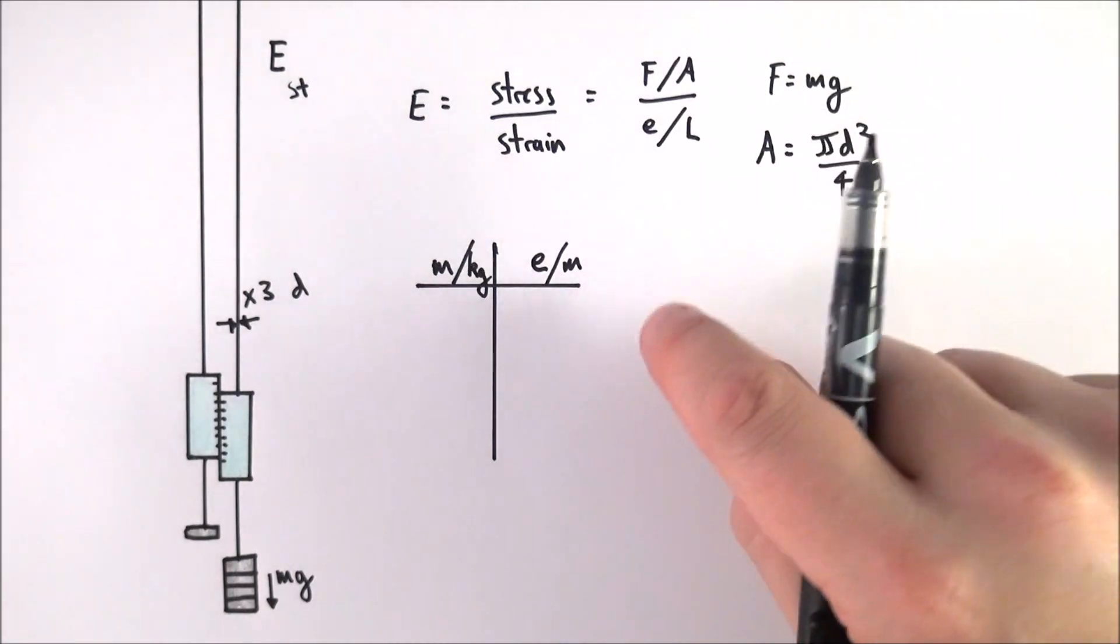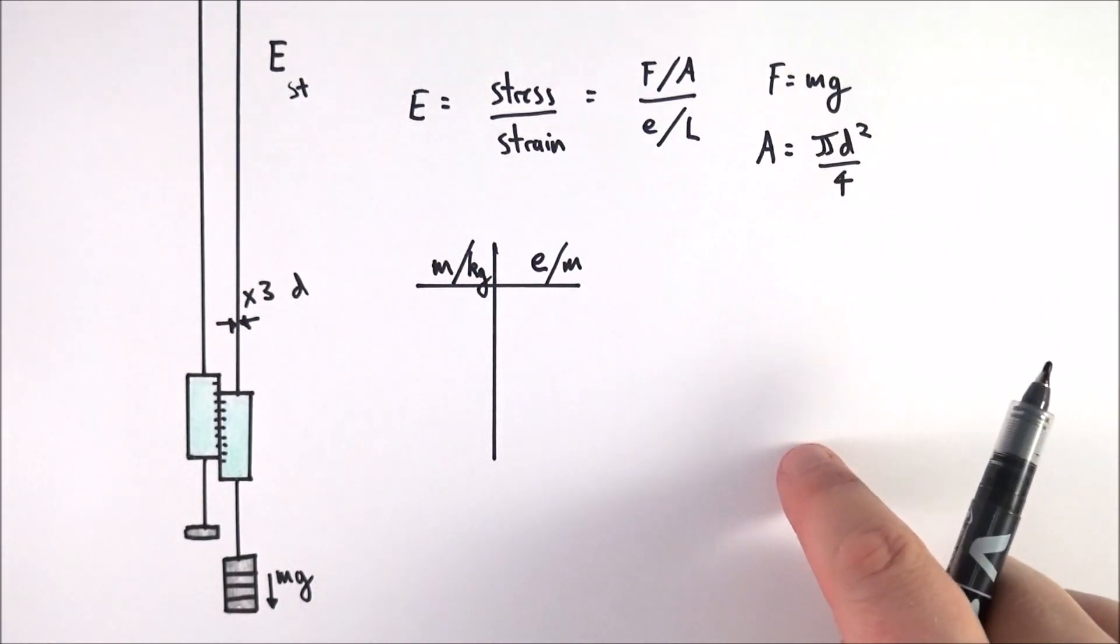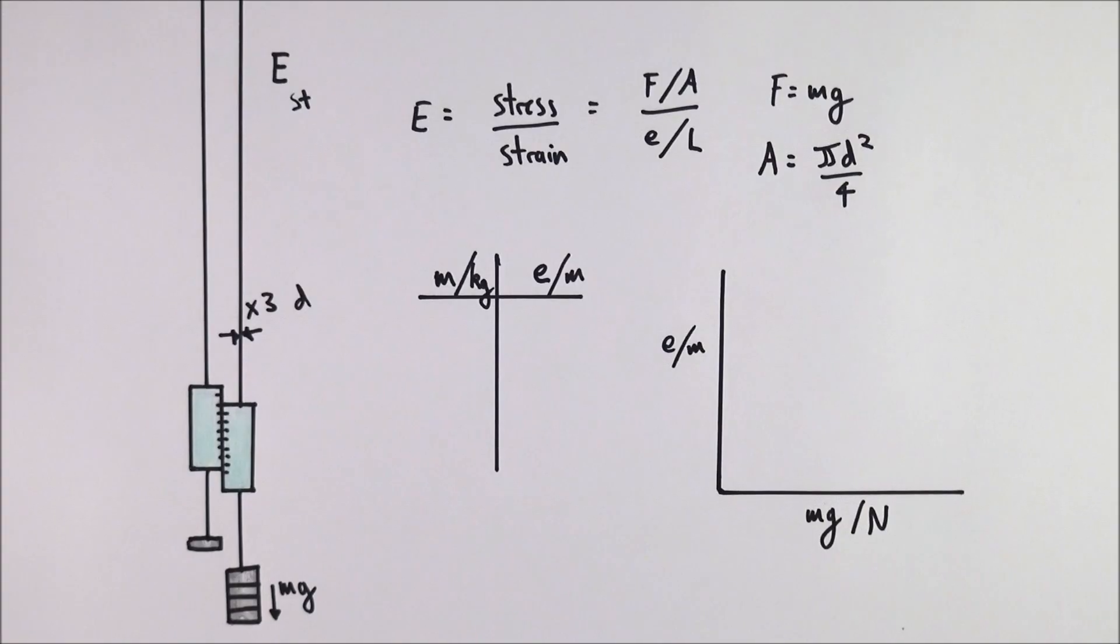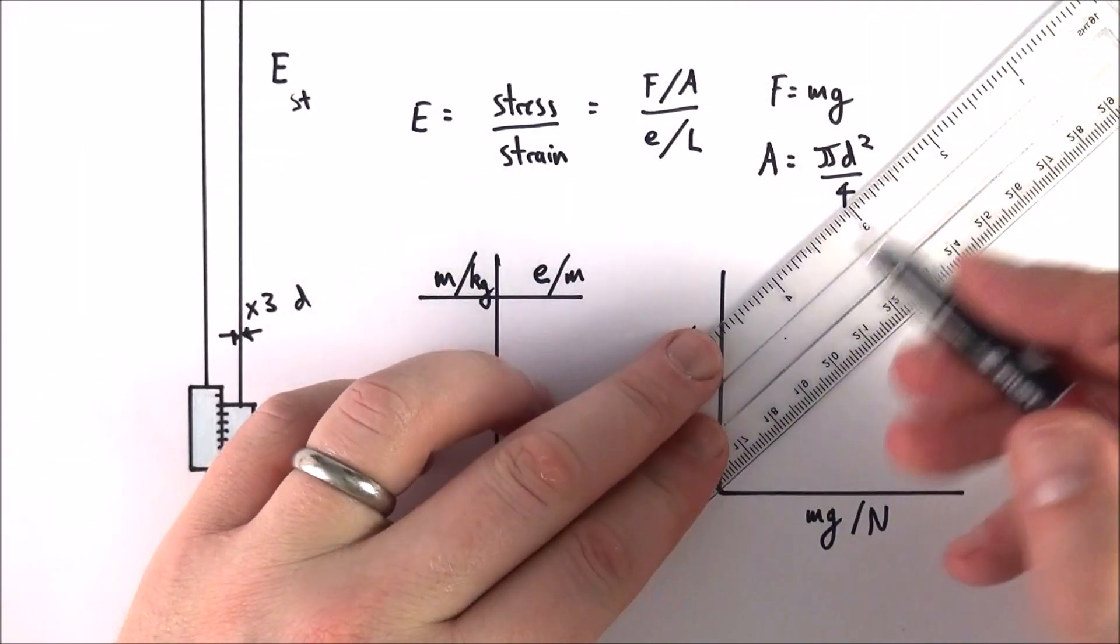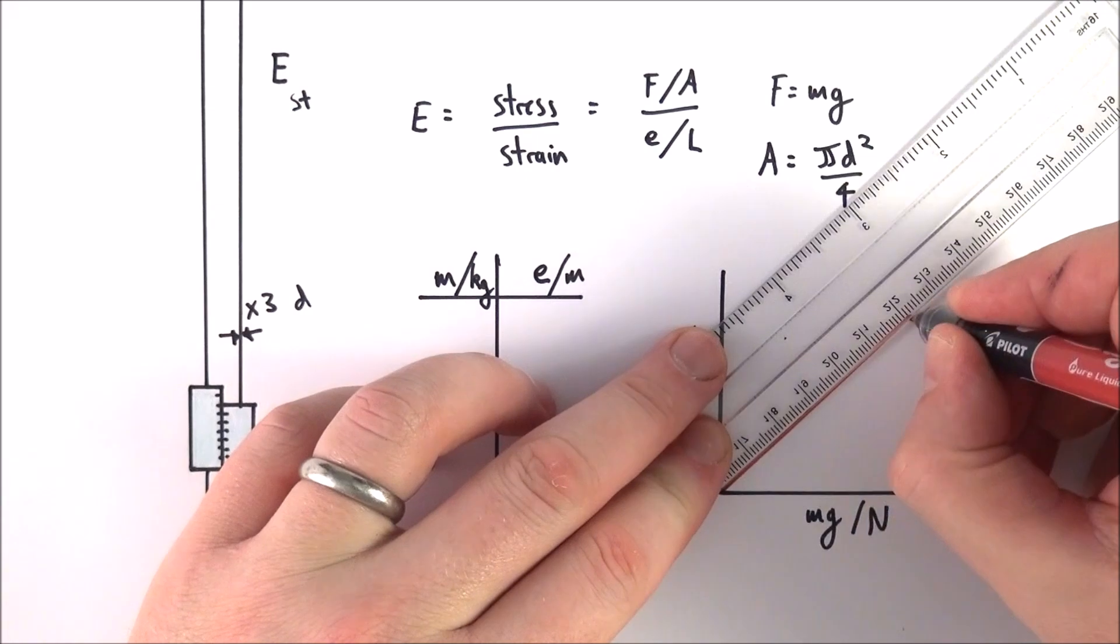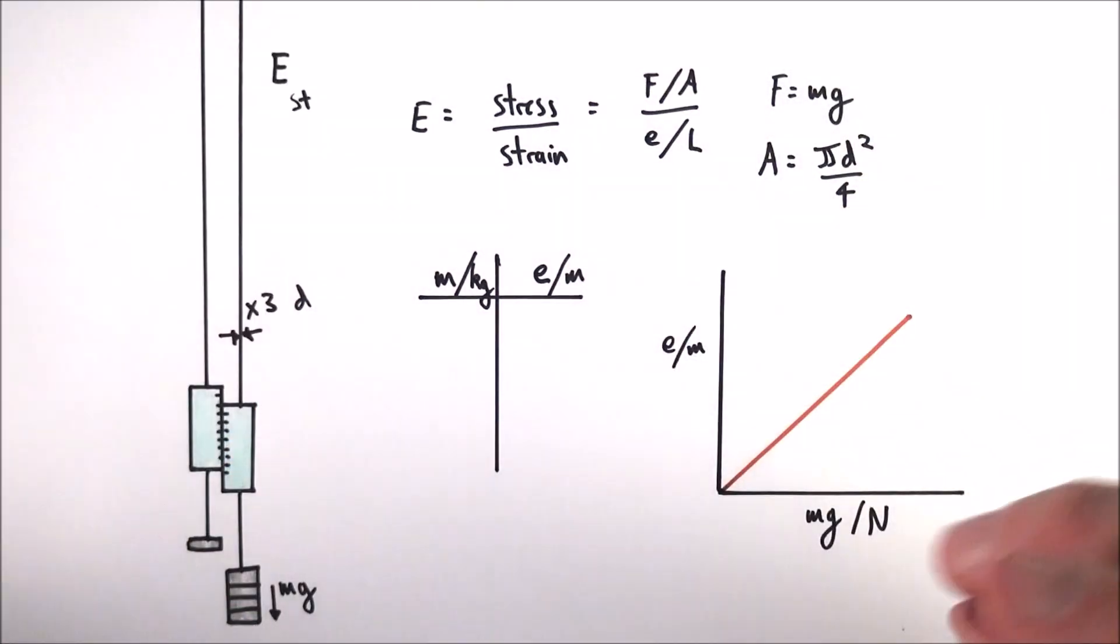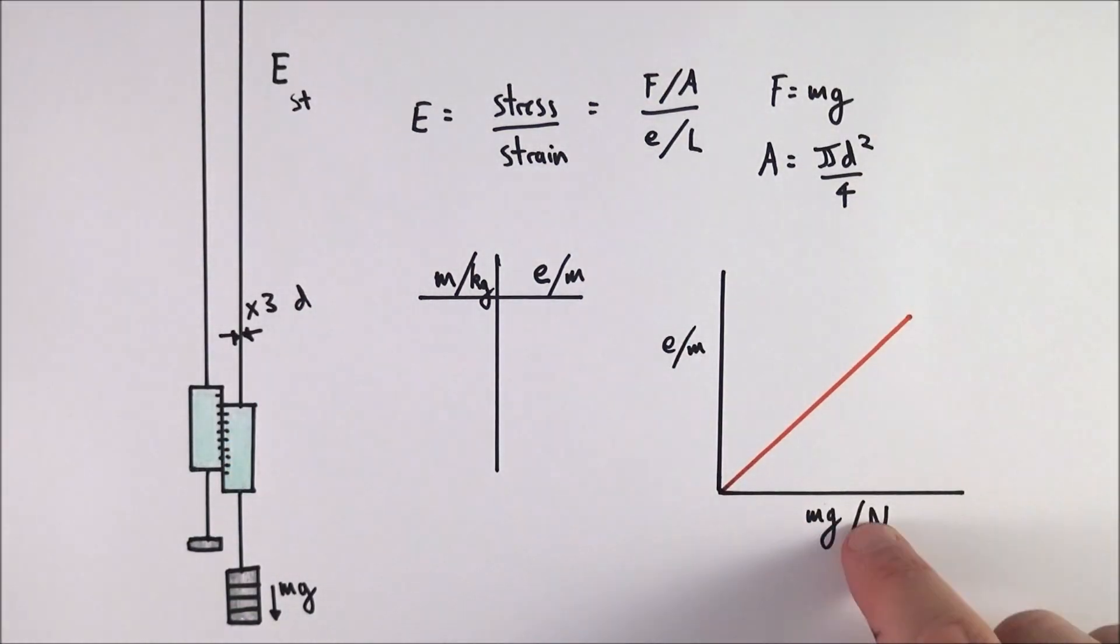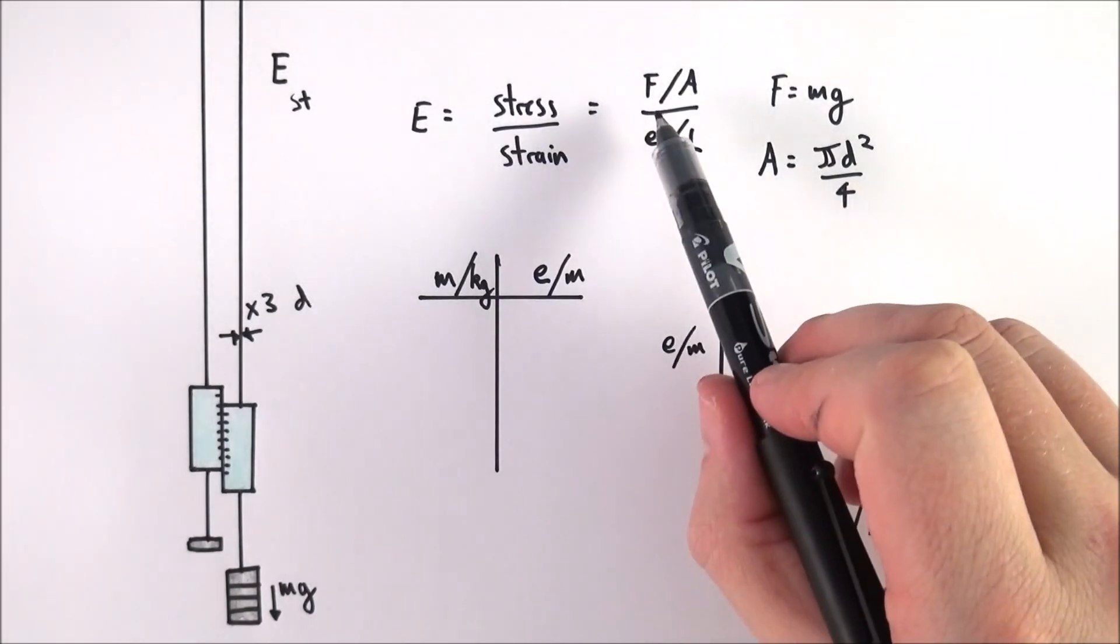What you can then do is plot a graph of the extension versus the weight applied. Provided you got some good results, what you should find is that you have a straight line that goes through the origin. Basically, the more weight you apply, the bigger the extension.